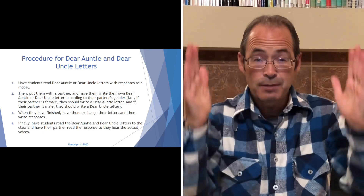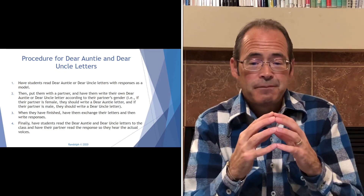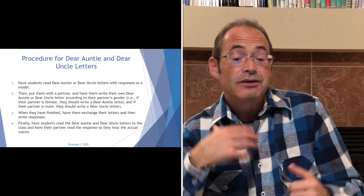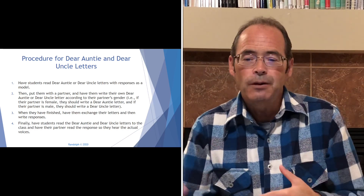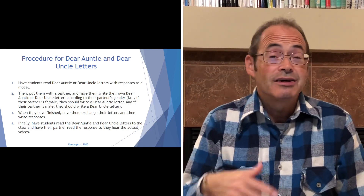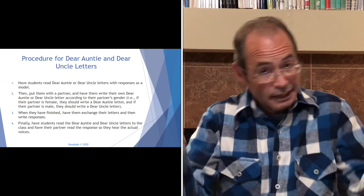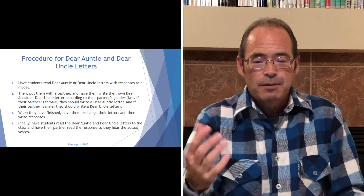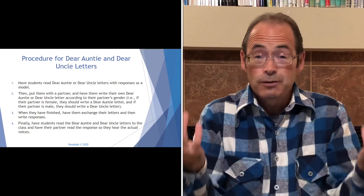Read them a model and I have one here for you today so they can frame it in their head. Step two: put them with a partner and have them write their own Dear Auntie or Dear Uncle letter according to the partner's gender — if their partner is female they write Dear Auntie, if male they write Dear Uncle. When they have finished, have them exchange the letters and then write the responses.